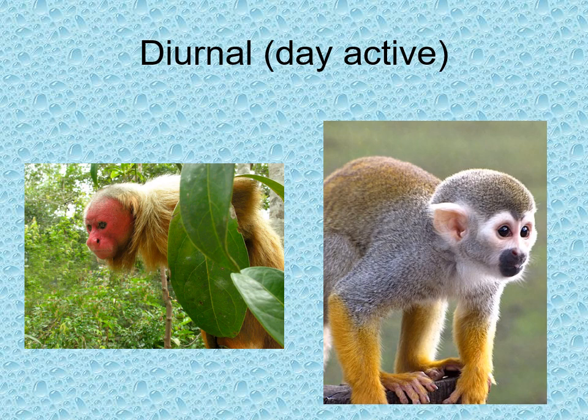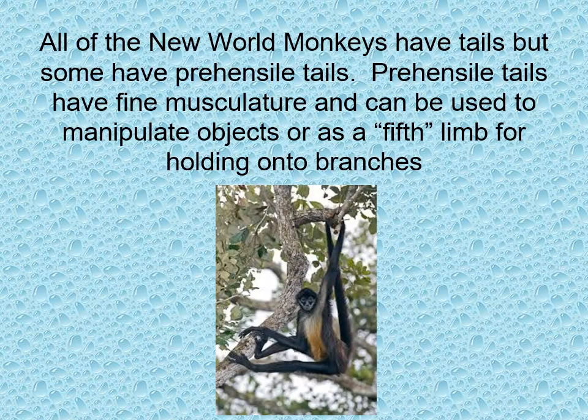Here are two examples of New World monkeys. If you look at the nose, you can see how the nostrils flare out. They come in many different sizes and shapes. On the left is a Uakari monkey with a red head. Monkeys see color well and oftentimes communicate through the colors on their bodies — that bright red head is telling us he's a very healthy individual. All New World monkeys have tails, but some have prehensile tails. Prehensile tails have fine musculature and can be used to manipulate objects or as a fifth limb for holding onto branches.